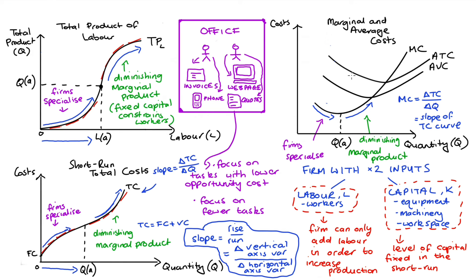The average total cost curve (ATC) is total cost divided by Q. It starts off high due to fixed costs but initially decreases as labor becomes more efficient through specialization. The average variable cost curve (AVC) is variable cost divided by Q and is very similar to ATC, except there is no fixed cost component, so it starts lower and is always below ATC. Due to specialization, average variable costs also initially decrease, just like the ATC curve.